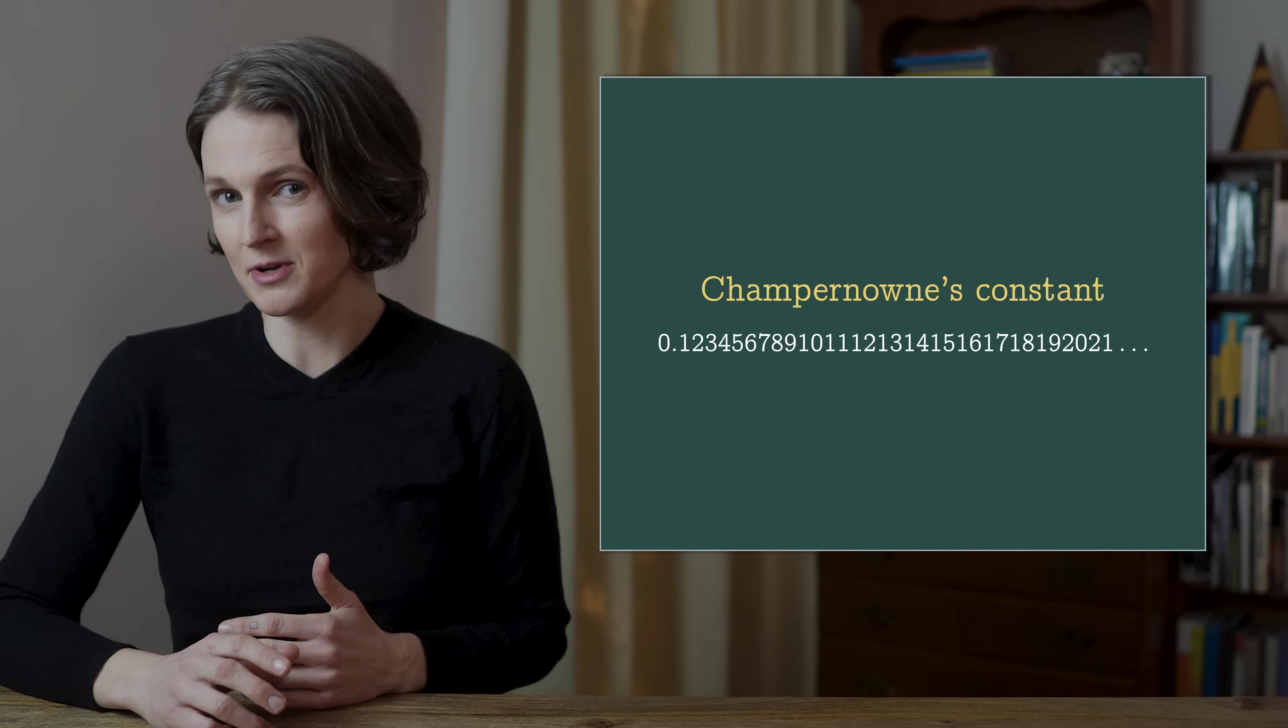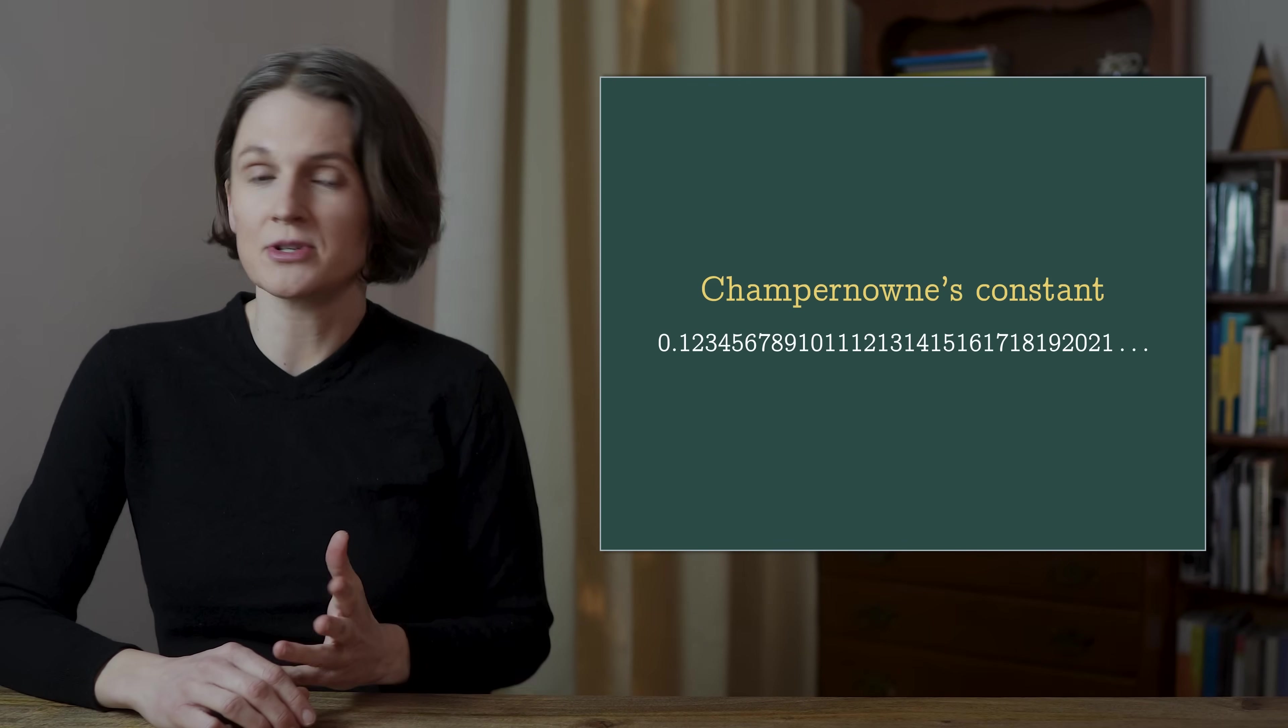By contrast, it's very hard to give an explicit example of a normal number, to actually describe a piece of hay in this haystack. There are only a few specific numbers that mathematicians know for sure are normal, and they're weird numbers, specifically designed to be normal, like this one, which is just all the numbers stuck together. 1, 2, 3, 4, 5, 6, and so on. It's kind of silly, but okay.